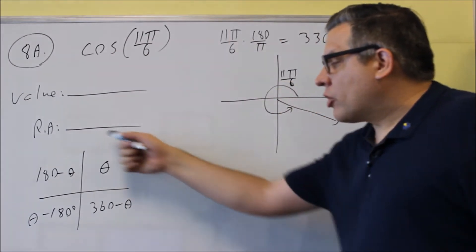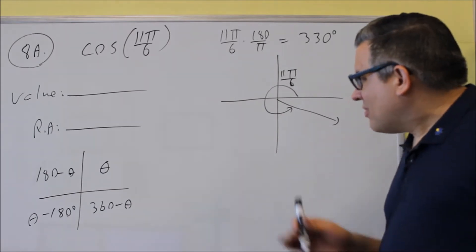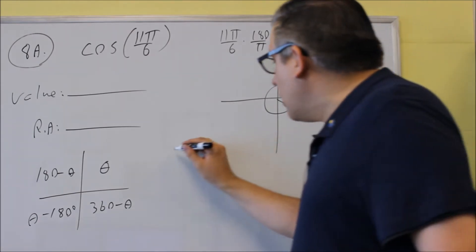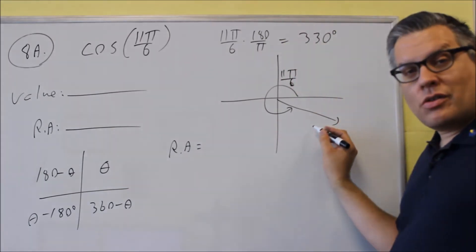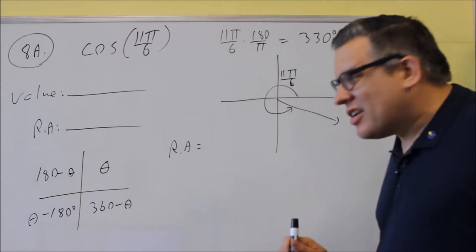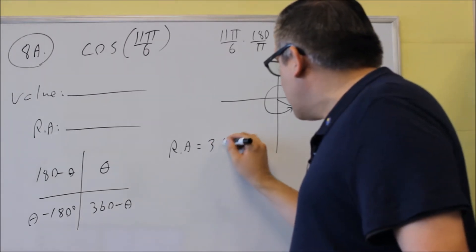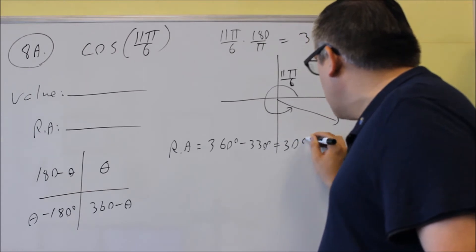So depending on what quadrant it ends up in, this tells you what reference angle formula you're going to use. In this case, the reference angle is going to equal, it ends up in the fourth quadrant here, so you're going to use 360 minus theta. 360 minus 330 equals 30 degrees.